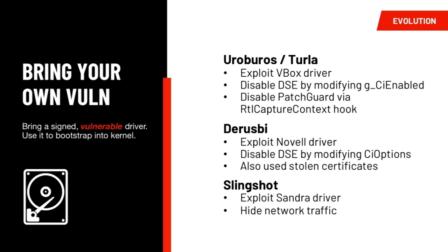Driver Signature Enforcement, Secure Boot, and PatchGuard have dramatically reduced the volume of commodity kernel mode threats — we don't really see botnets numbering in the millions using kernel malware anymore. However, it has not stopped APT-level threats using kernel mode techniques. One common theme among APT-level kernel malware is installing a legitimate, signed but vulnerable driver and then exploiting it to gain kernel code execution, thereby sidestepping Driver Signature Enforcement. Another technique is to steal a digital certificate from a legitimate company and sign your malware with it, which gets you loaded and makes you look more legitimate on the endpoint.